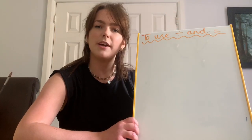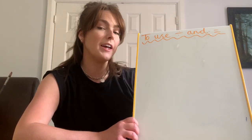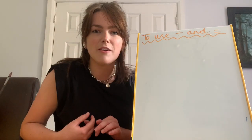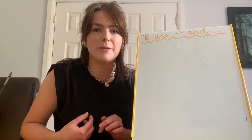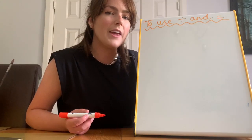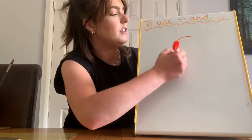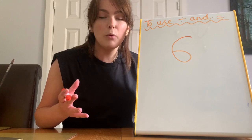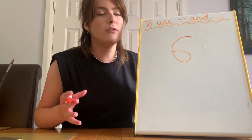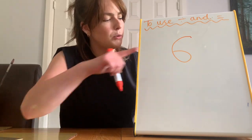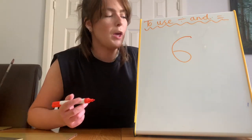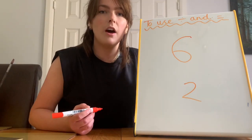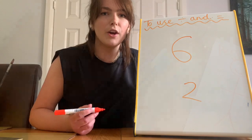Our learning objective today is to use division and equals. Remember, division is like the opposite of multiplication. When we divide, we're taking an amount like six and we are sharing it equally between a certain amount of groups. So if I wanted to share six between two people, I wonder what we would get. Let's have a look.